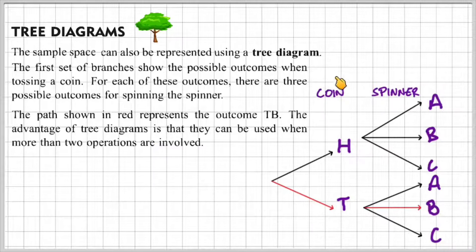The first branch represents the coin, the second branch represents the spinner and we can follow each path to find each of the outcomes. So heads and A, heads and B, heads and C, tails and A, tails and B, tails and C.